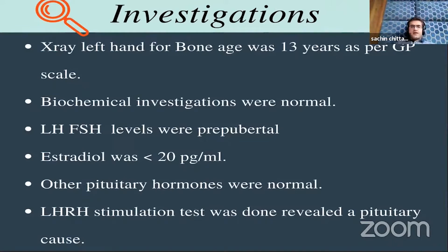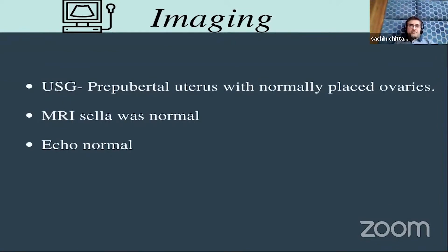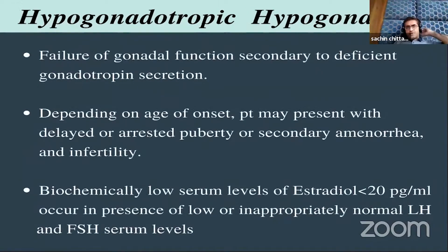Biochemical investigations were normal. LH and FSH were pre-pubertal, and estradiol was less than 20 picograms per ml — very typical. Other pituitary hormones were normal. LHRH stimulation was done, though not strictly indicated, because we could not differentiate between CDGP and hypogonadotropic hypogonadism. USG showed a pre-pubertal uterus with normally phased ovaries. MRI sella was normal. Echocardiography was also normal. The diagnosis was hypogonadotropic hypogonadism, as LH, FSH, and estradiol were all low.